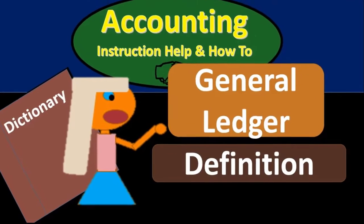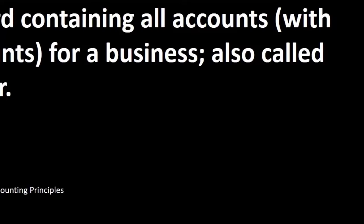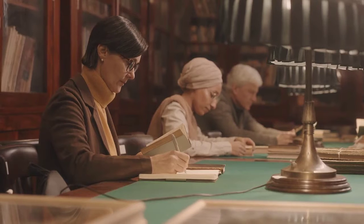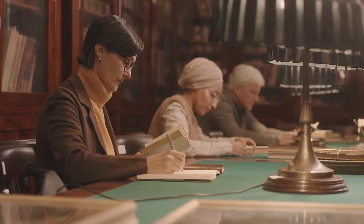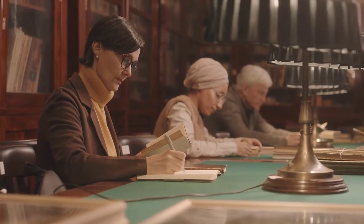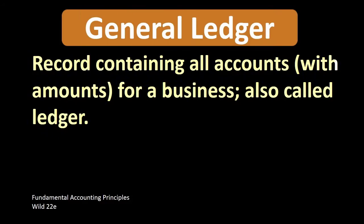In this presentation we will define general ledger. According to Fundamental Accounting Principles, Wild 22nd Edition, the definition of general ledger is: a record containing all accounts with amounts for a business, also called ledger.